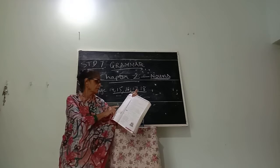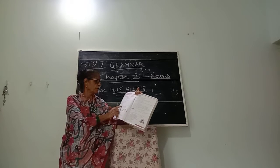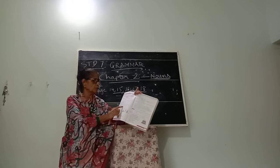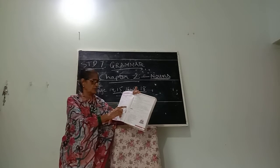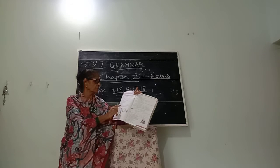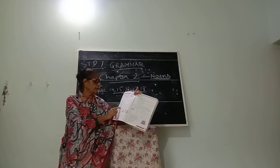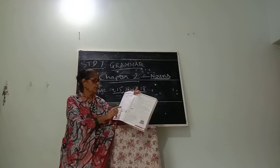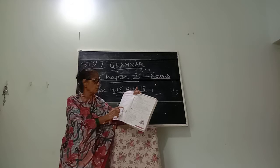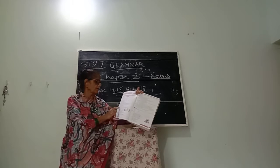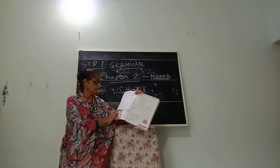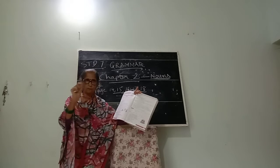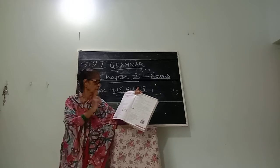Now abstract nouns are names of quantities, ideas, emotions and such things which we cannot see or touch. Examples: friendship, honesty, beauty. Now material nouns are names of materials or substances used as ingredients for making things — for example, water, iron, steel. I have underlined the nouns for you and shown you which they are.